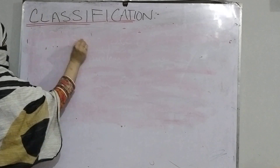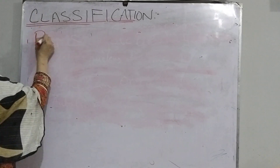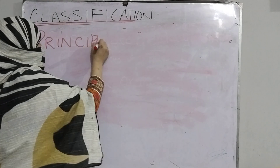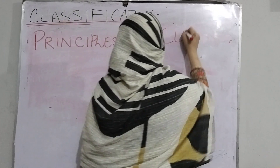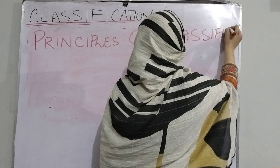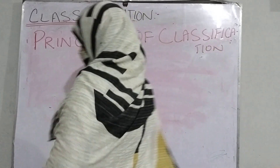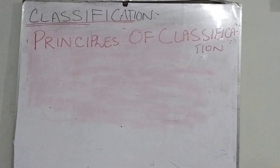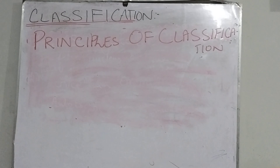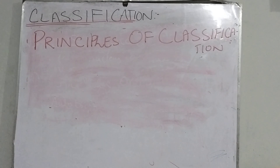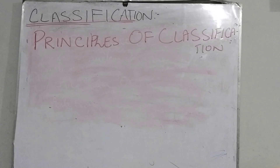Now our next topic is principles of classification. The principles of classification means: what are the rules we keep in mind to classify organisms into different groups? The first principle is that we look at the apparent characteristics. For example, mammals are organisms that give birth to young, feed their young with milk, and have hair on their bodies — so we observe their physical characteristics.